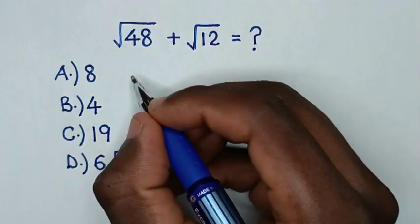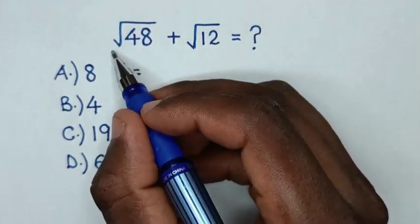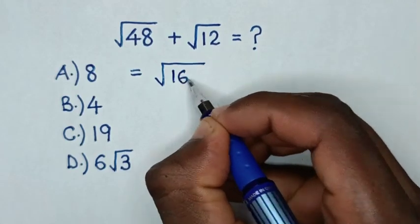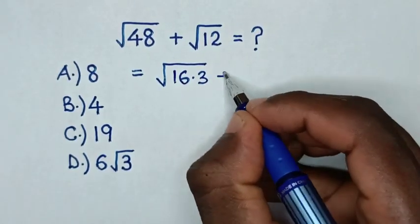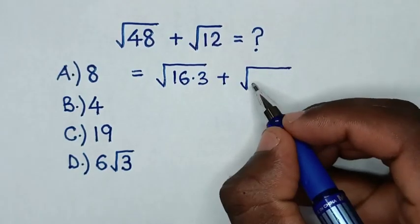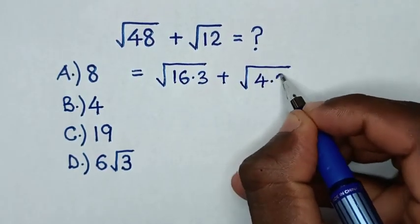So from this expression, it will be equal to square root of 48, which is same as square root of 16 times 3, then plus square root of 12, which is same as square root of 4 times 3.